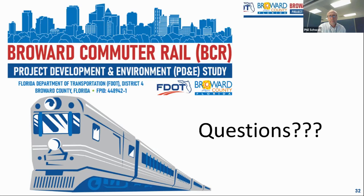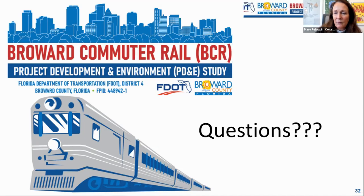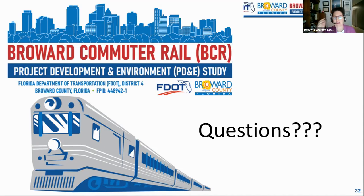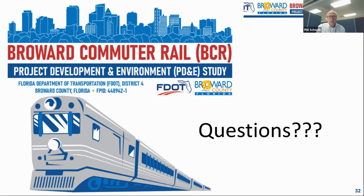Melinda clarifies the total daily train count: in addition to Bright Line trains that could max out at 36, the additional commuter rail trains would bring the range to approximately 54 to 60 total trains per day, since trains have to return at the end of the day and the count is not simply one-directional.